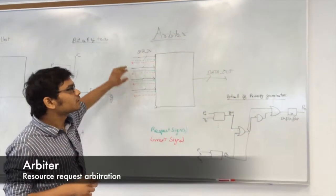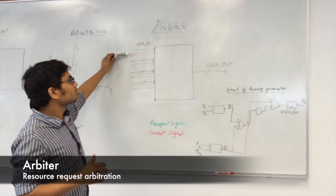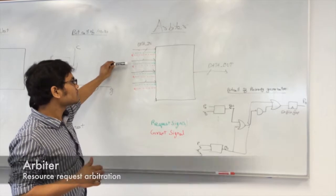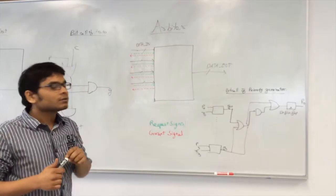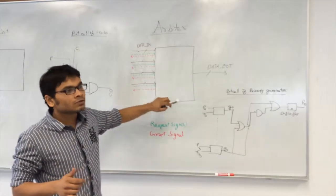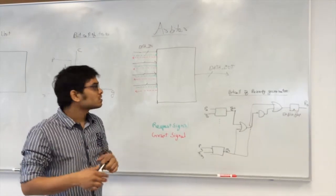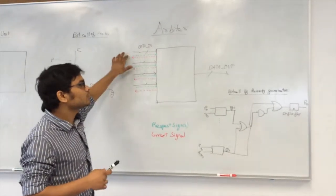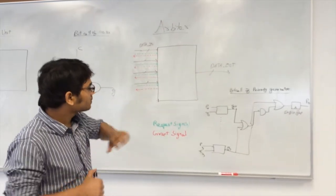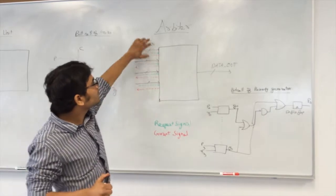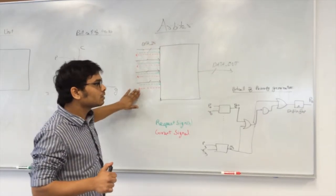The basic function of the arbiter is to arbitrate between the different request signals by the requesters over a single resource in order to access the resource to pass the data out. The arbiter generates the grant signals depending on the priority.